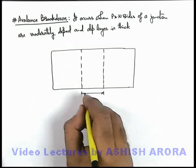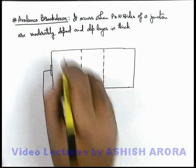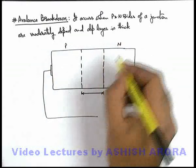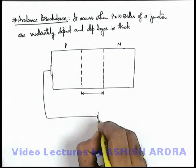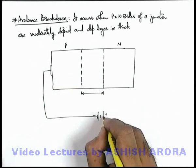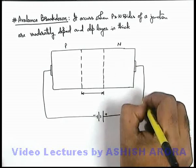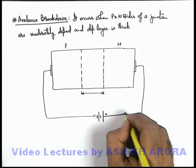Say if this d is large, certainly in this situation on applying reverse biasing voltage, if this is the p side, this is the n side, and we connect the negative side of the battery to the p side of semiconductor and positive terminal of battery to the n side of semiconductor and we close down the switch.